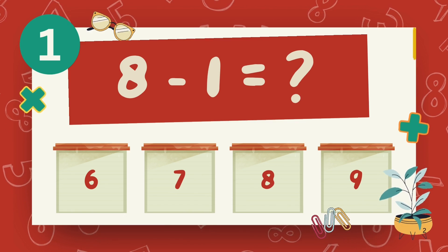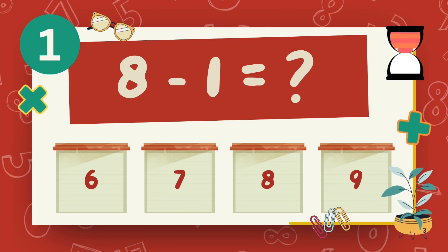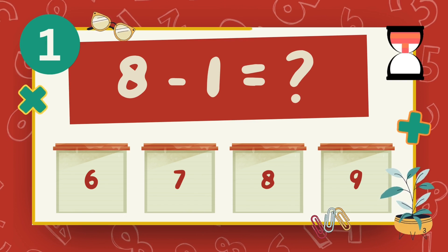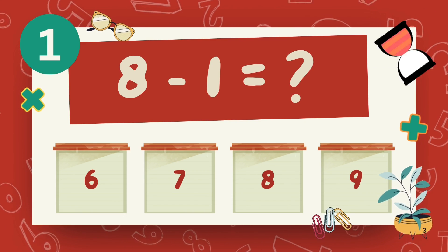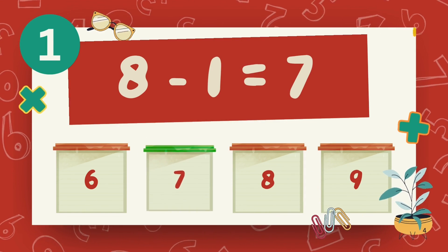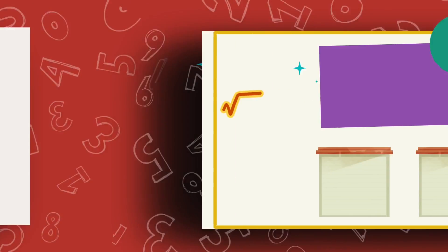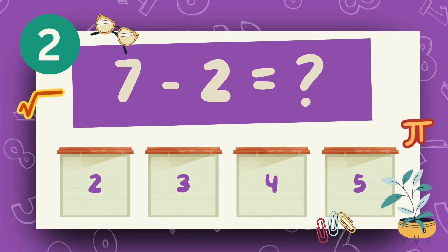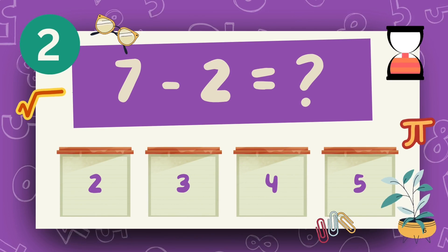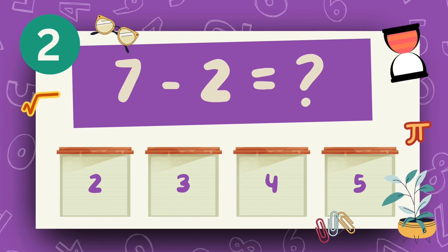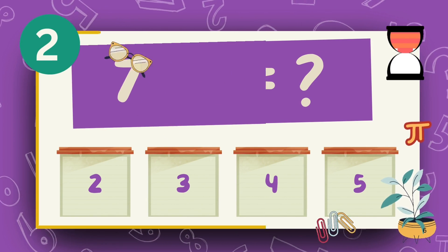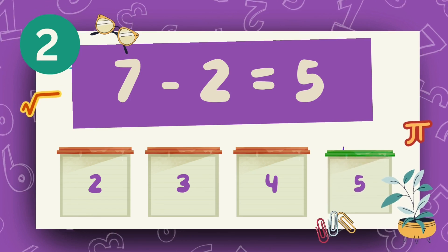What is eight minus one? The answer is seven. What is seven minus two? The answer is five.